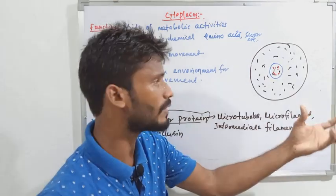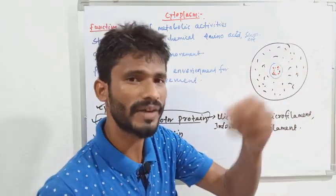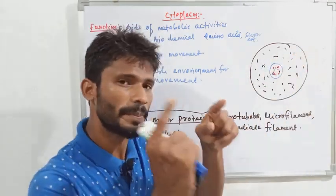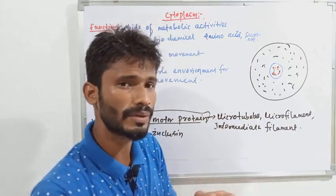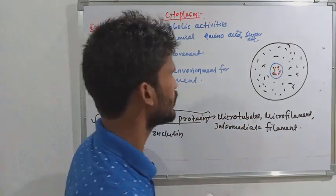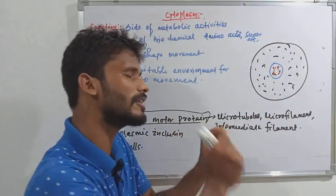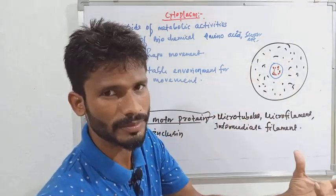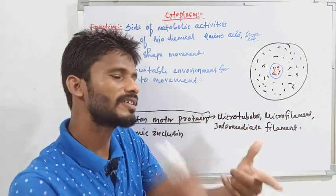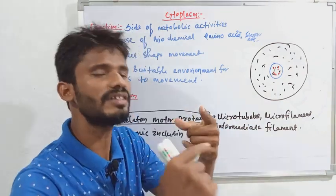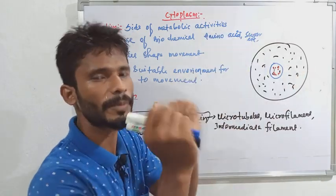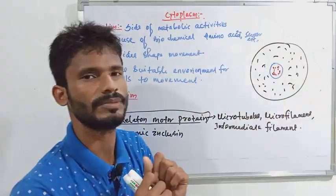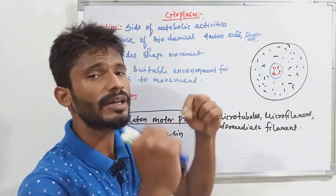In prokaryotic organisms, there is no defined nucleus membrane — the chromosomes and DNA are found directly within the cytoplasm. So for prokaryotes, cytoplasm and protoplasm are essentially the same concept. Cytoplasm is simply a part of the protoplasm.